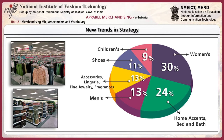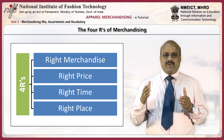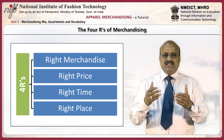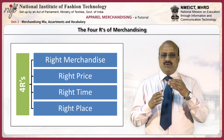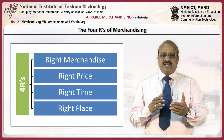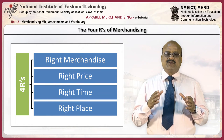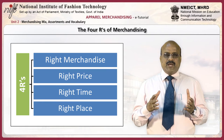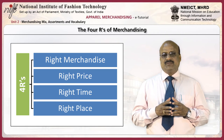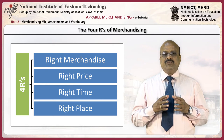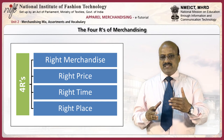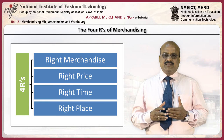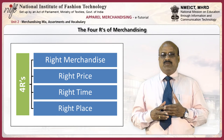Let us now move on to the 4 R's of Merchandising. Fashion merchandising is the process of planning, buying and selling fashion apparel and accessories in order to offer the right merchandise blend to meet the demands of target markets. Fashion merchandising is the function of planning to fulfill customers' requirements with the right merchandise, at the right price, at the right time, in the right place.